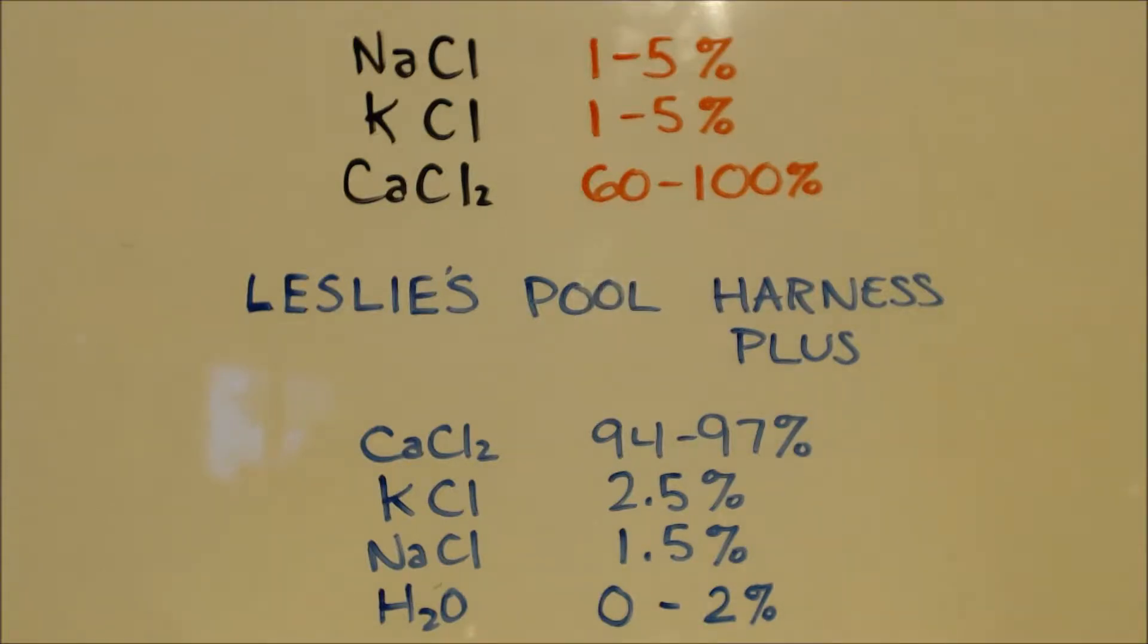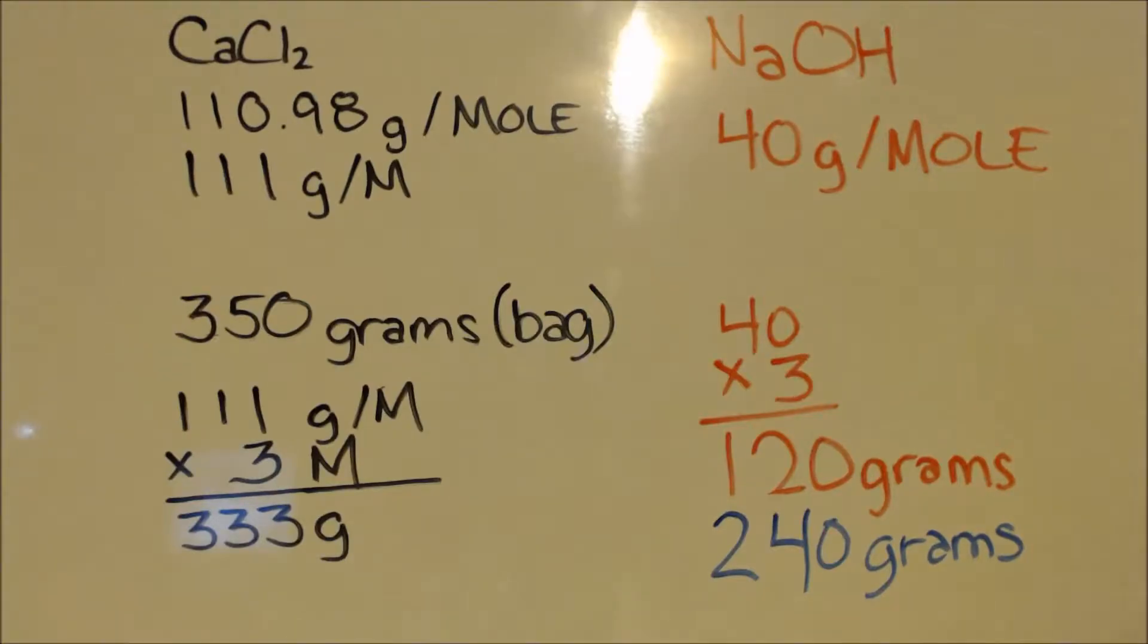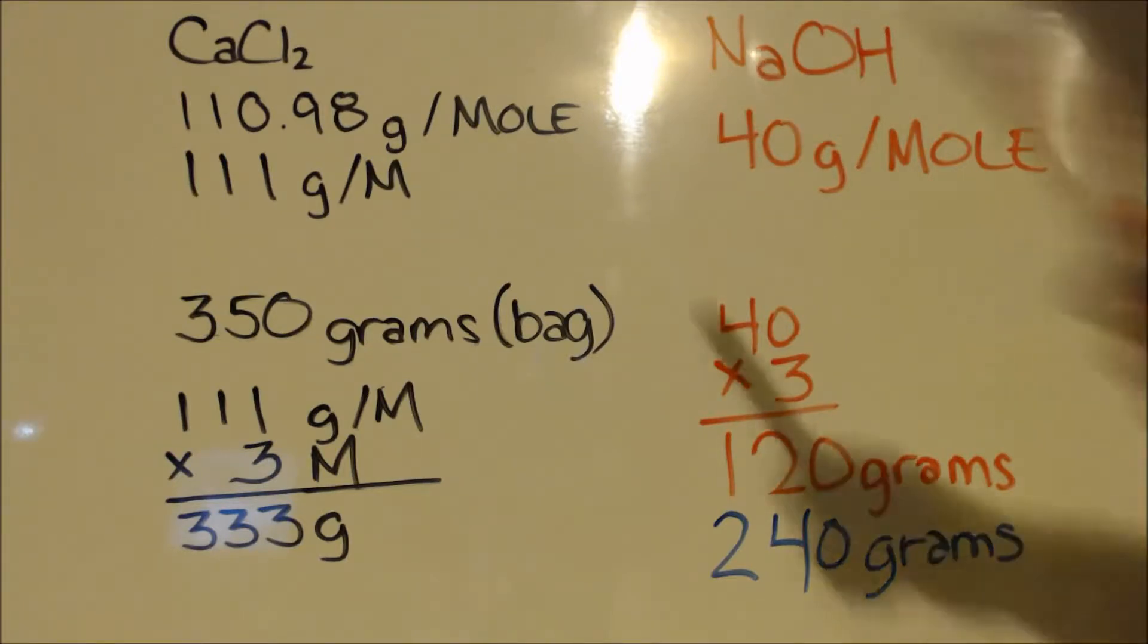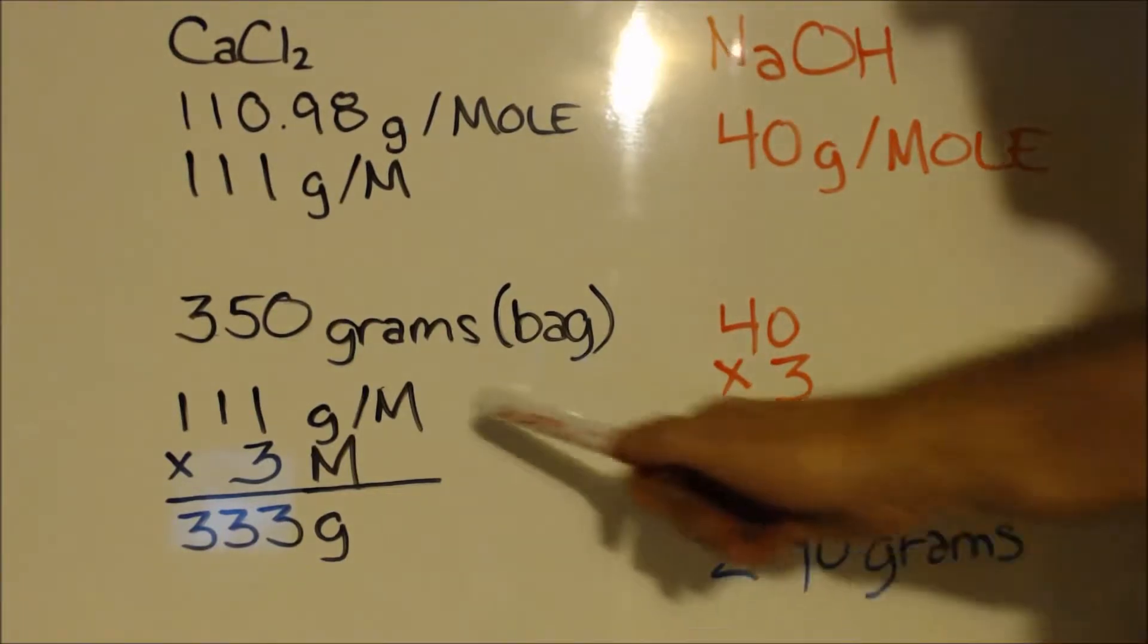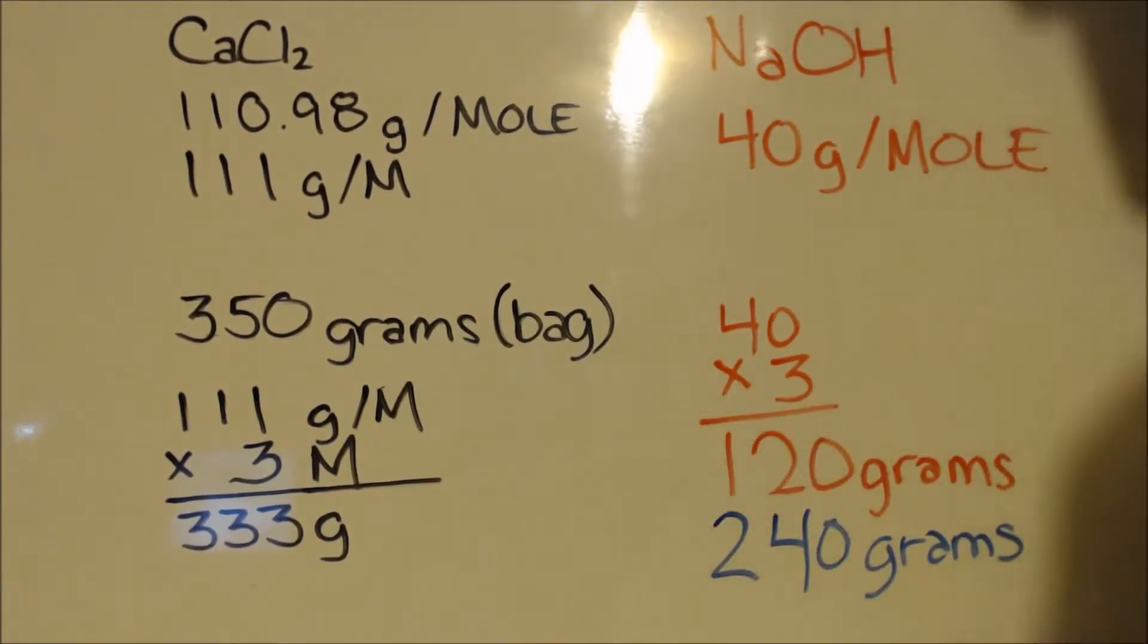Since we don't know the actual percentage of our calcium chloride from the Damp Rid, we'll have to figure something out. As we discussed, I need twice as much sodium hydroxide. According to the equation, I got 350 grams out of the bag of calcium chloride, Damp Rid. Now a mole of calcium chloride is 111 grams. So if I take 3 times 111, that's 333 grams.